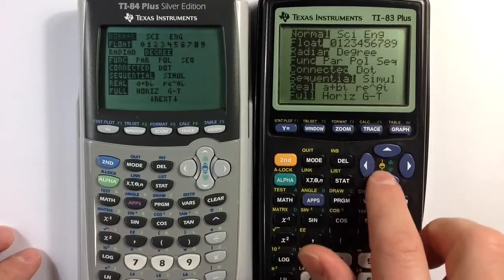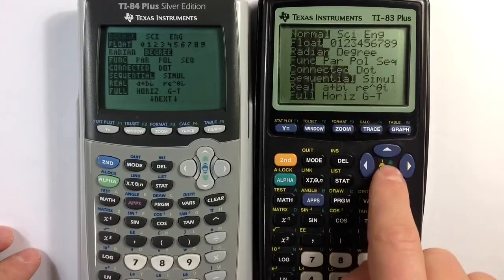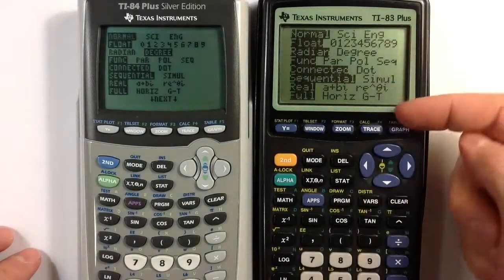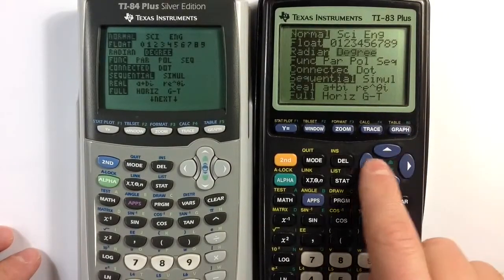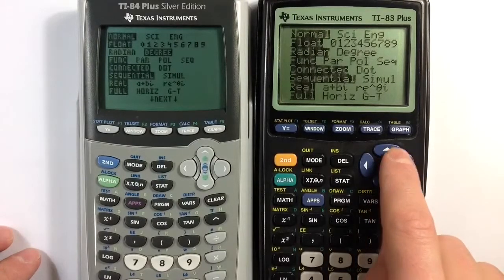As you can see, we can navigate through the menu by using the arrow keys. The up and down arrow go between the different setting options, the different categories of settings. And then the left and right go between the two or more options that might exist.